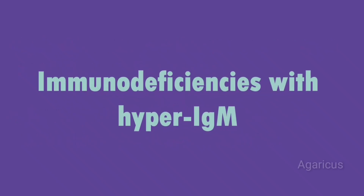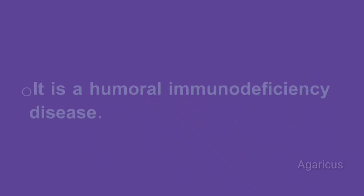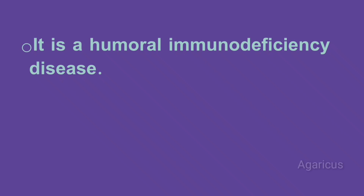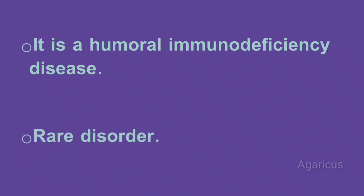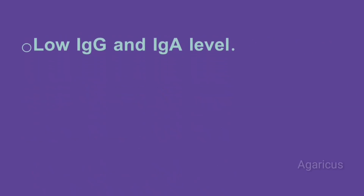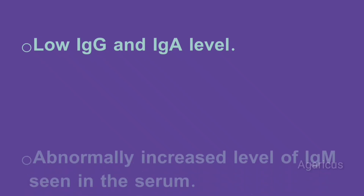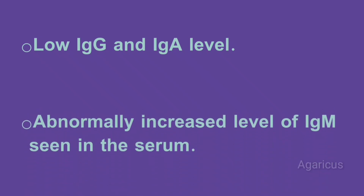Next, immunodeficiency with hyper-immunoglobulin M. It is a humoral immunodeficiency disease and a rare disorder. When affected, immunoglobulin G and immunoglobulin A levels become very low, while there is also an abnormally increased level of immunoglobulin M in the serum.